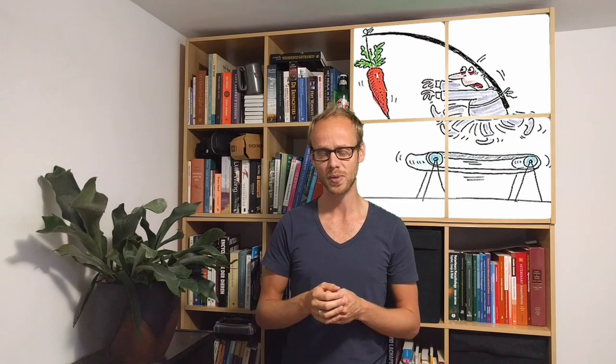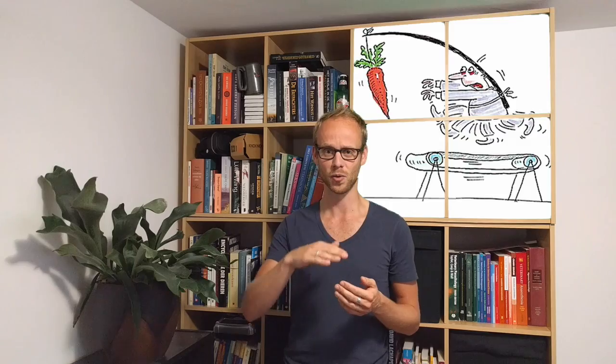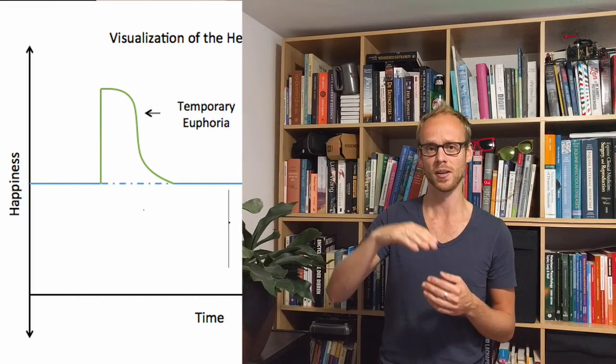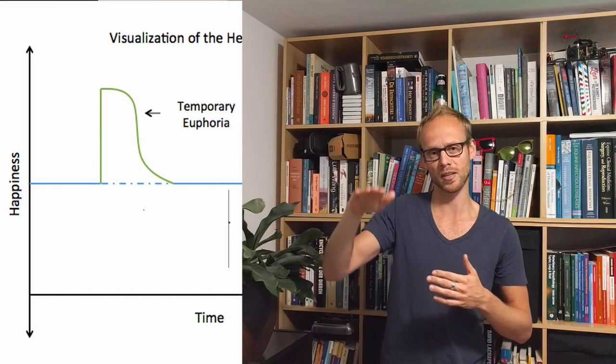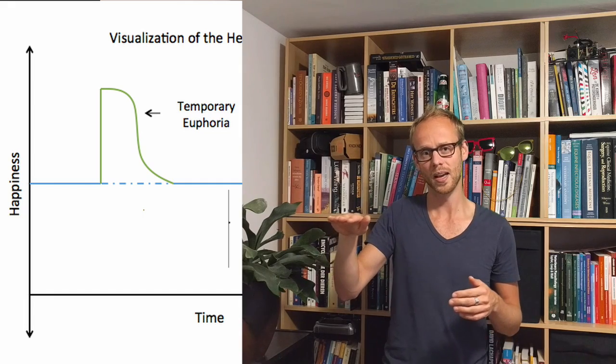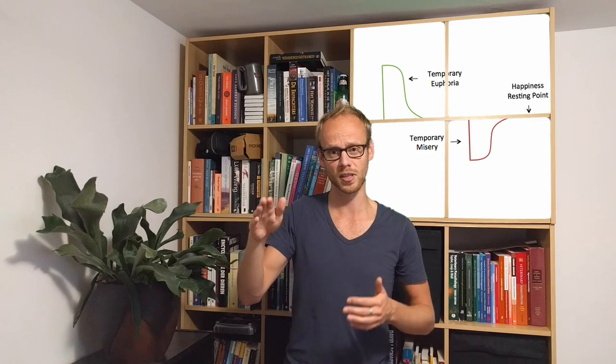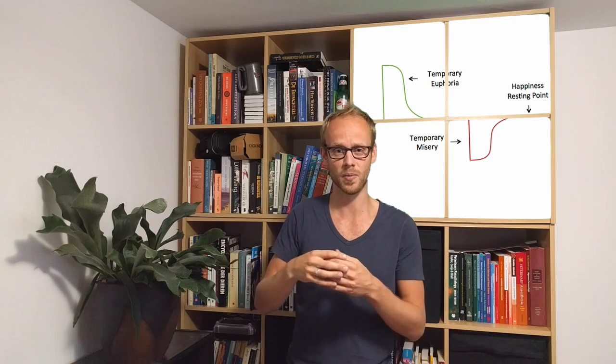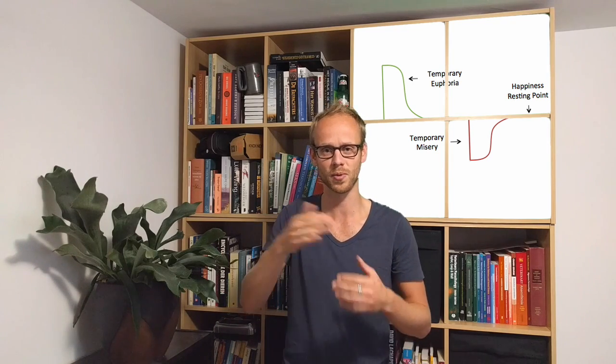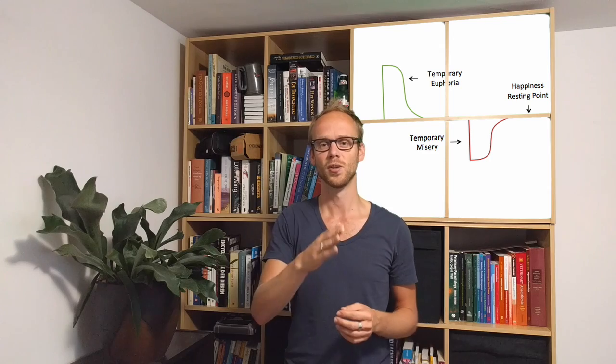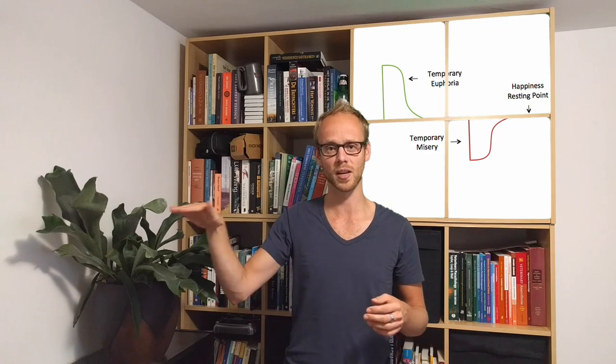In psychology this is called the hedonic treadmill. It basically means that if you go one step up the happiness ladder you get used to it. And it gets normal. And it's the same the other way around. If you find some difficulties in your life it may take a while before you bounce back. But eventually you will bounce back to your baseline of happiness.